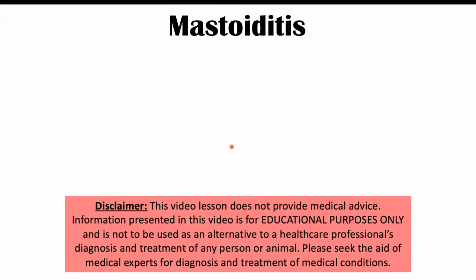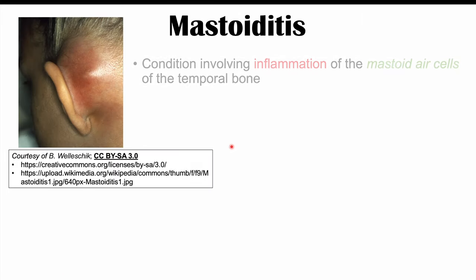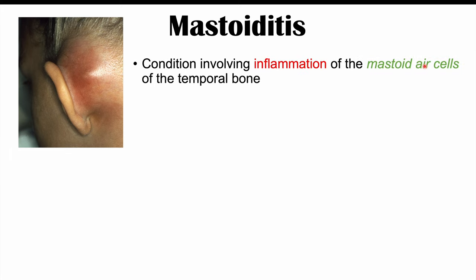This lesson is on the condition known as mastoiditis. Mastoiditis is a condition involving inflammation of the mastoid air cells of the temporal bone. The mastoid air cells are located in the mastoid process, which is the bony protuberance behind the ear. This is where we get the name mastoiditis — 'itis' means inflammation and 'mastoid' refers to the mastoid process.